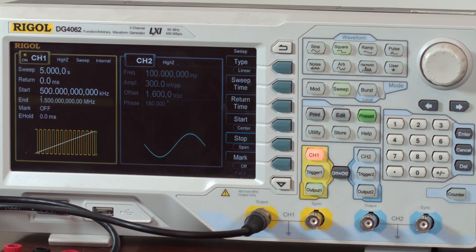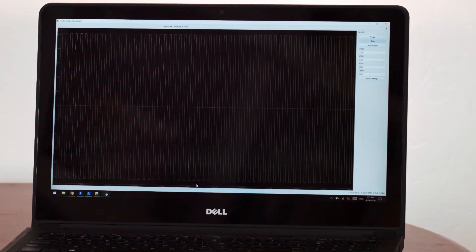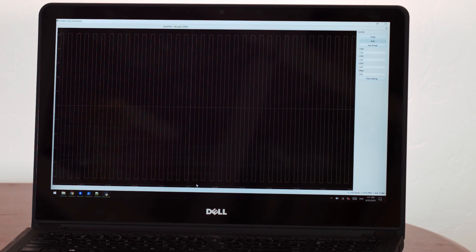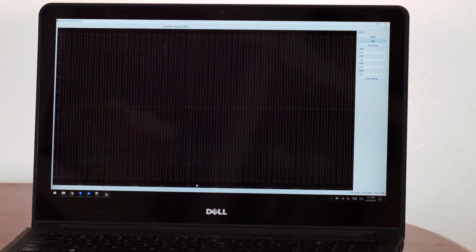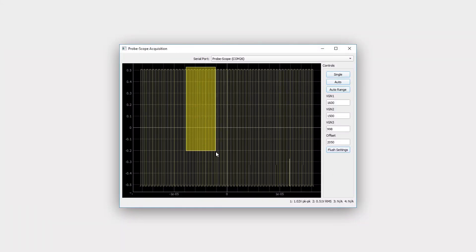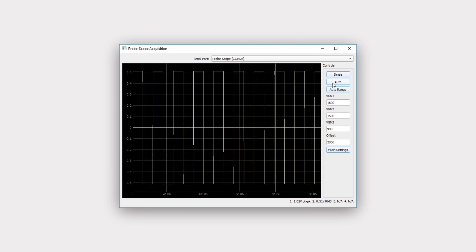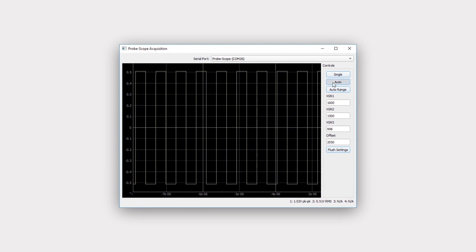In terms of specs, we've built it to have similar capabilities to some of the popular entry-level oscilloscopes. The Probescope sports a sampling rate of 250 mega samples per second at an analog bandwidth of 60 megahertz, with a maximum sampling depth of 16 million points.